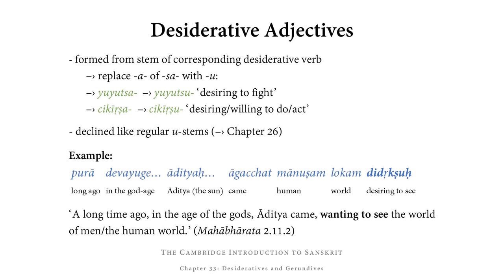Next up, desiderative adjectives. These are formed from the stem of the corresponding desiderative verb, but what we need to do is replace the final a of the verb suffix sa with u. So from yudh (to fight), we get a desiderative verbal stem yuyutsa. The corresponding desiderative adjective stem would be yuyutsu, meaning desiring to fight.